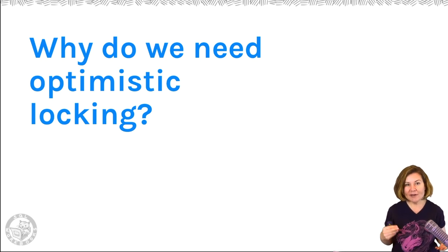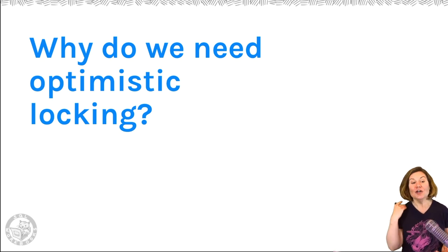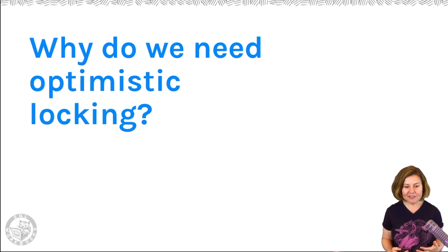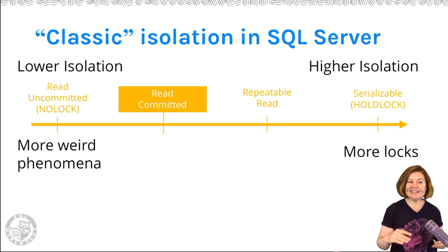Also, the readable secondary feature in availability groups takes advantage of snapshot isolation to make reading that secondary possible and to try to help the performance of getting the data over to the secondary while people are reading it as good as possible. So just like Microsoft, these days when we're coming up with new applications and new features, it can be really useful to use these optimistic forms of locking instead of these older pessimistic isolation levels.